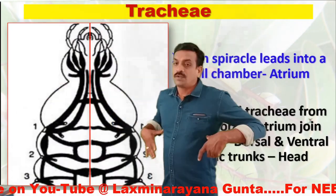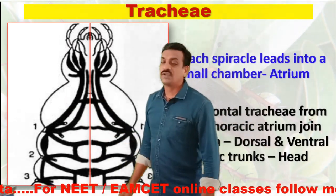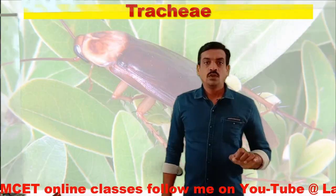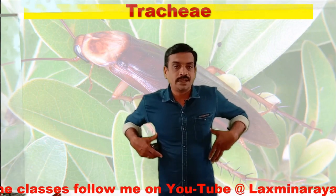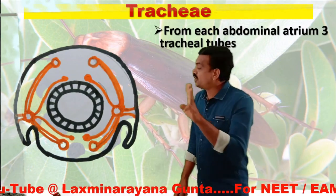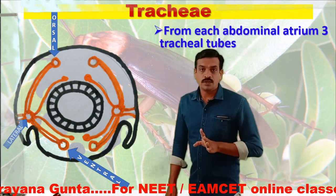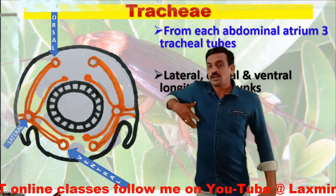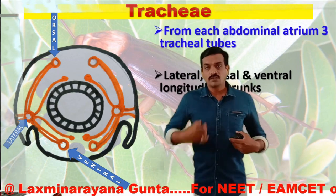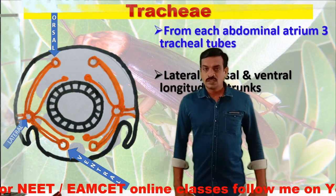The horizontal tracheae from the thoracic atrium join to form dorsal and ventral cephalic trunks, which supply oxygen to the head region of the cockroach. Coming to the abdominal atria, from each abdominal atrium three tracheal tubes arise — one on the lateral side, one on the dorsal side, and one on the ventral side. The lateral tracheal tubes from one side all unite to form a lateral longitudinal trunk. Similarly, the ventral abdominal tubes form a ventral longitudinal tracheal trunk.